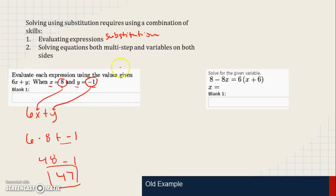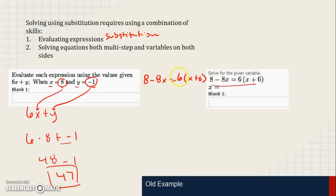The second old example is solving equations with variables on both sides. We're familiar with solving equations with one variable. When we have one variable on both sides — for example, 6x equals 6 times x plus 6 — we first simplify. There's nothing to simplify on the left side, but on the right side we distribute the 6 to x and 6, giving us 6x plus 36.